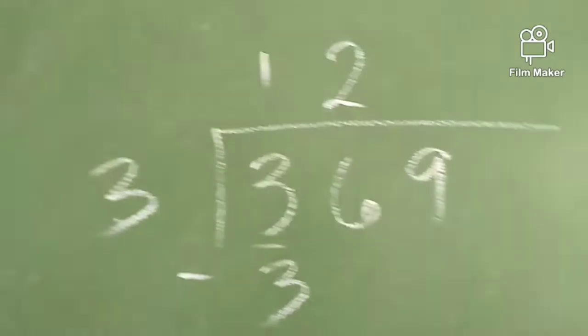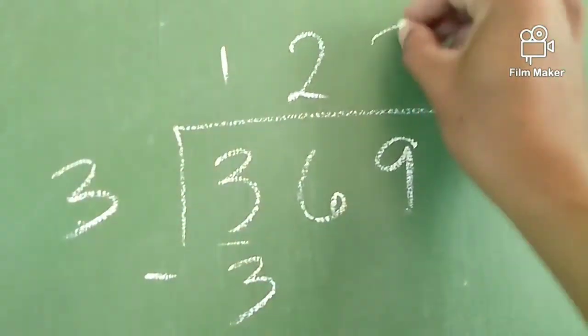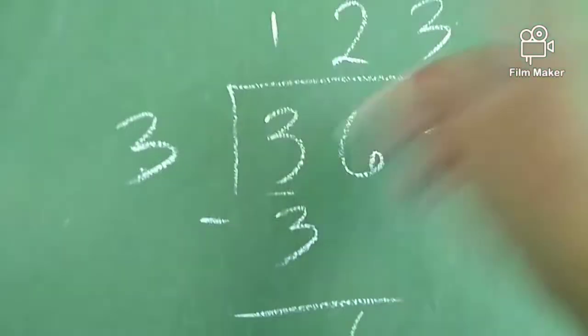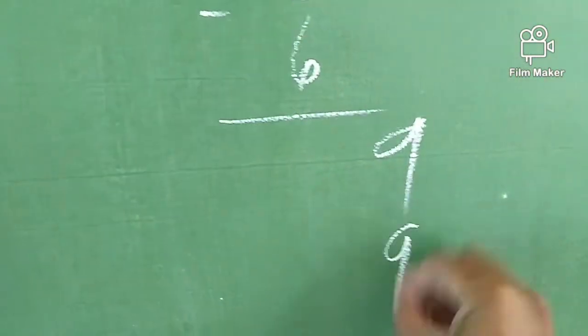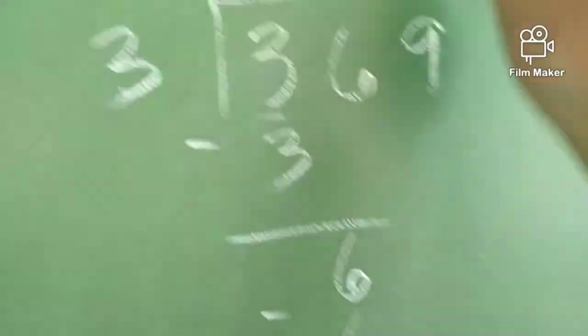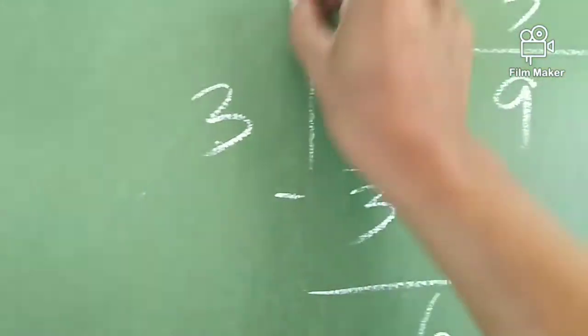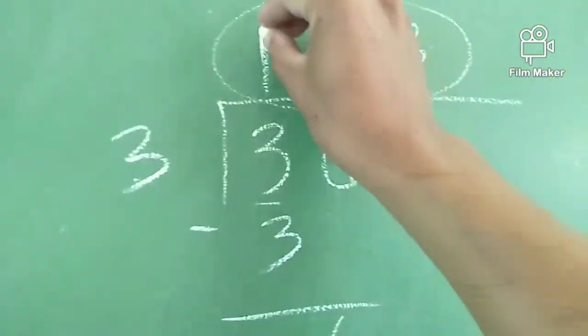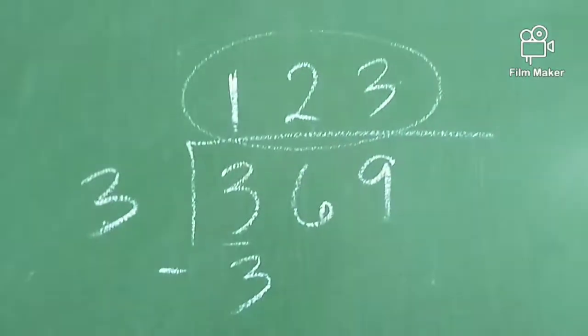Bring down 9. 9 divided by 3, so we have 3. Then 3 times 3, we have 9. Subtract ulit natin siya. So 0. The answer, or the quotient, is 123.